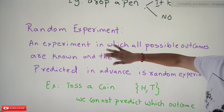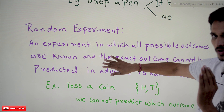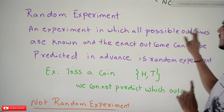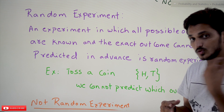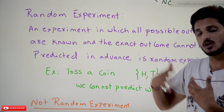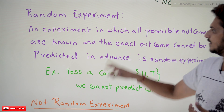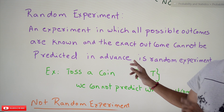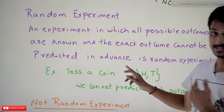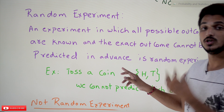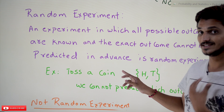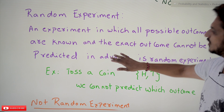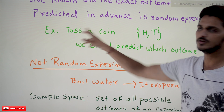Now coming to the next definition — random experiment. It is a little confusing to understand, so watch carefully. An experiment in which all possible outcomes are known — we know when we do this type of experiment what outcomes it is going to get — and the exact outcome cannot be predicted in advance. That is what random experiment means. The exact output cannot be predicted in advance. We know all the possible outcomes, but the exact outcome cannot be predicted in advance.